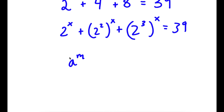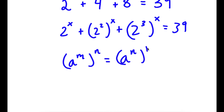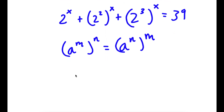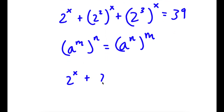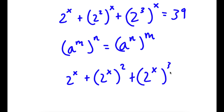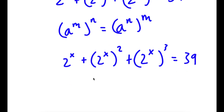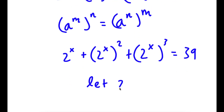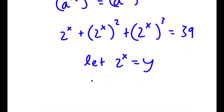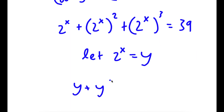If I have something in the form a to the power of m to the power of n, this is the same thing as a to the power of n to the power of m. So 2 to the power of 2 to the power of x, I can rewrite as 2 to the power of x to the power of 2. And 2 to the power of 3 to the power of x, I can rewrite as 2 to the power of x to the power of 3. Now I'm going to let 2 to the power of x equal the variable y. So now I have y plus y squared plus y to the power of 3 is equal to 39.